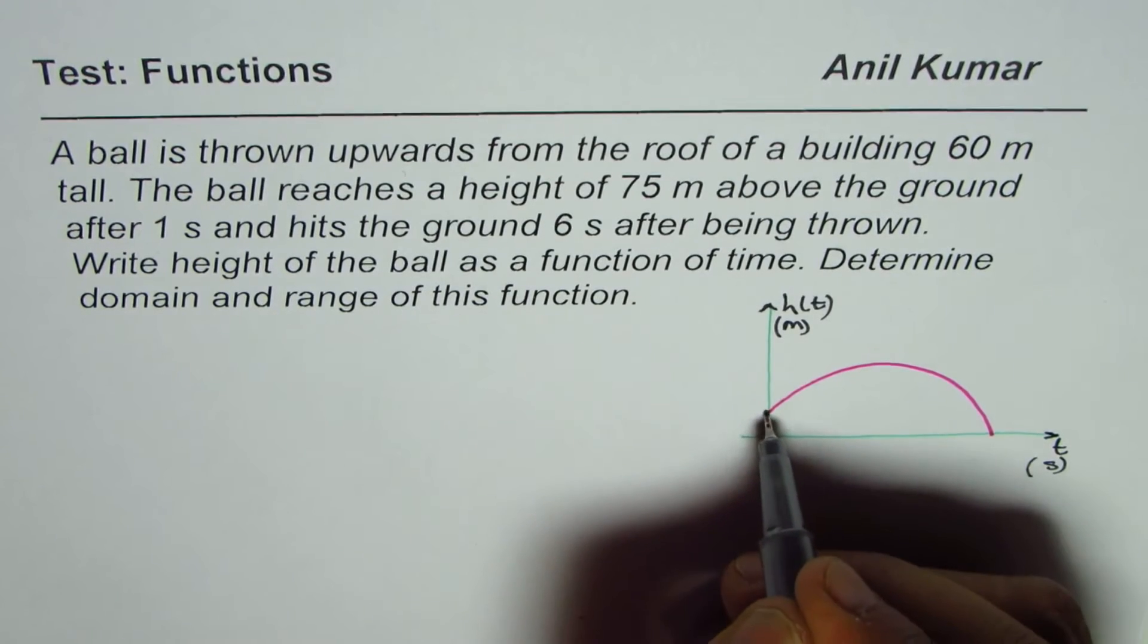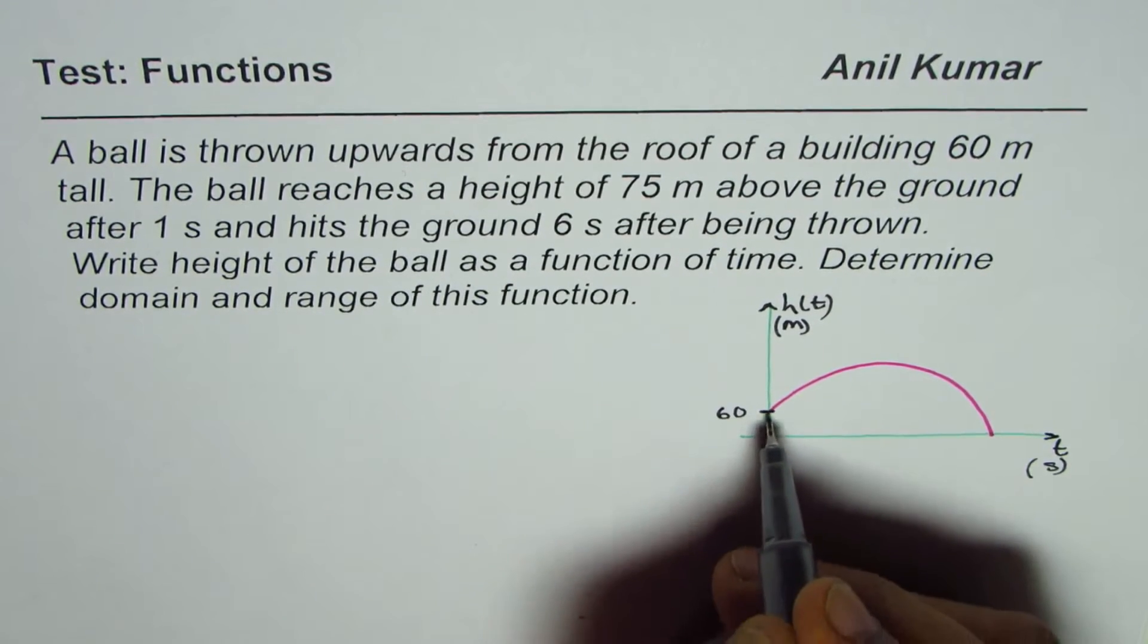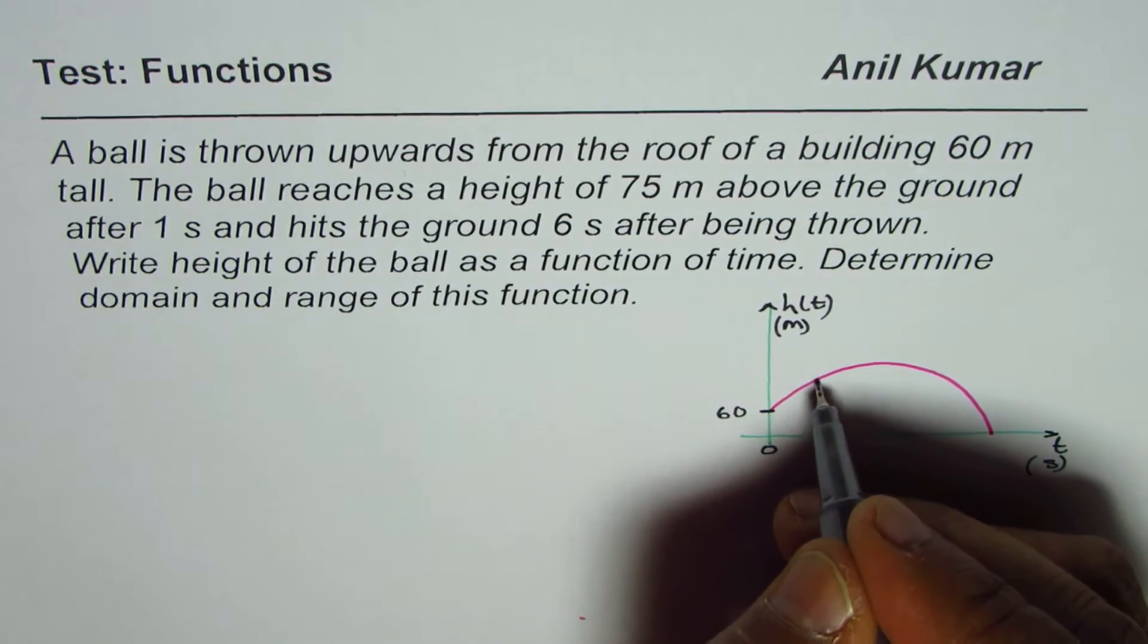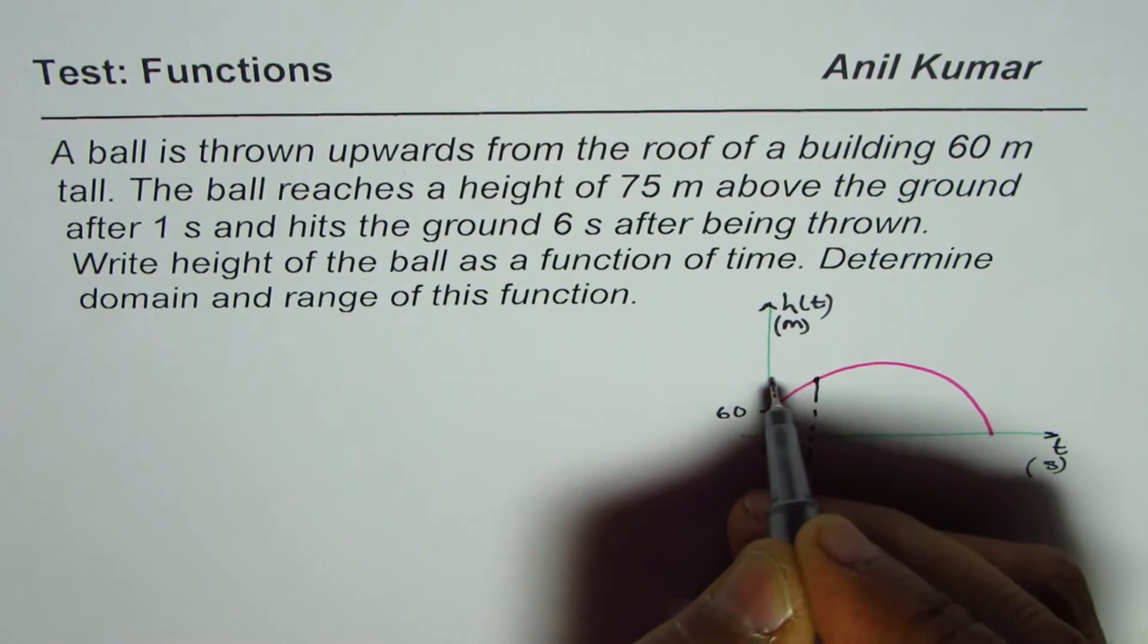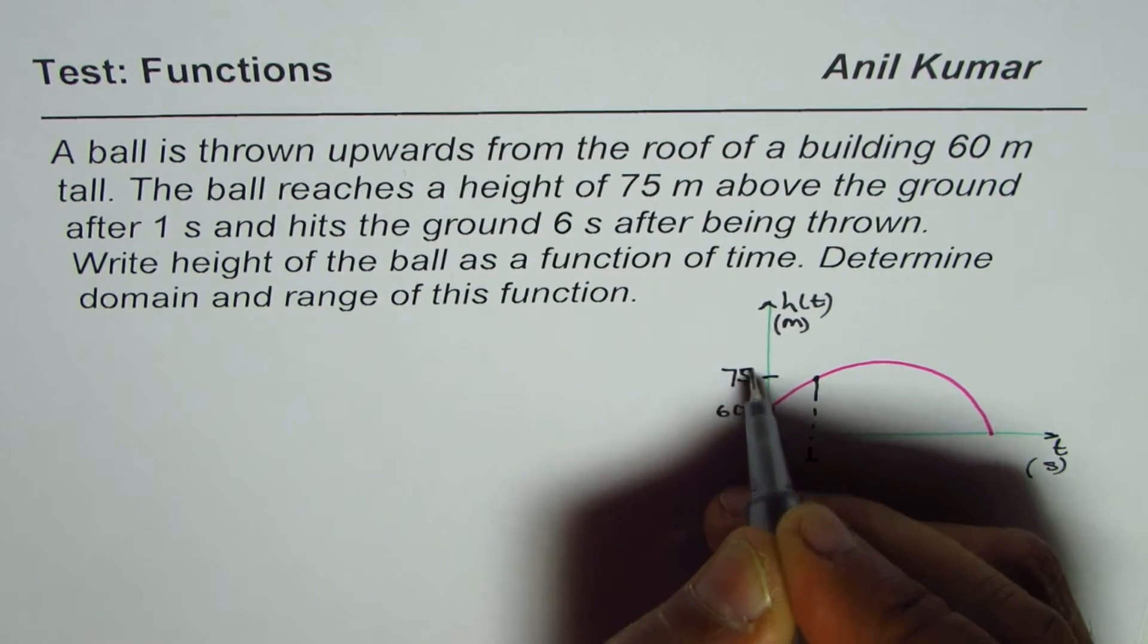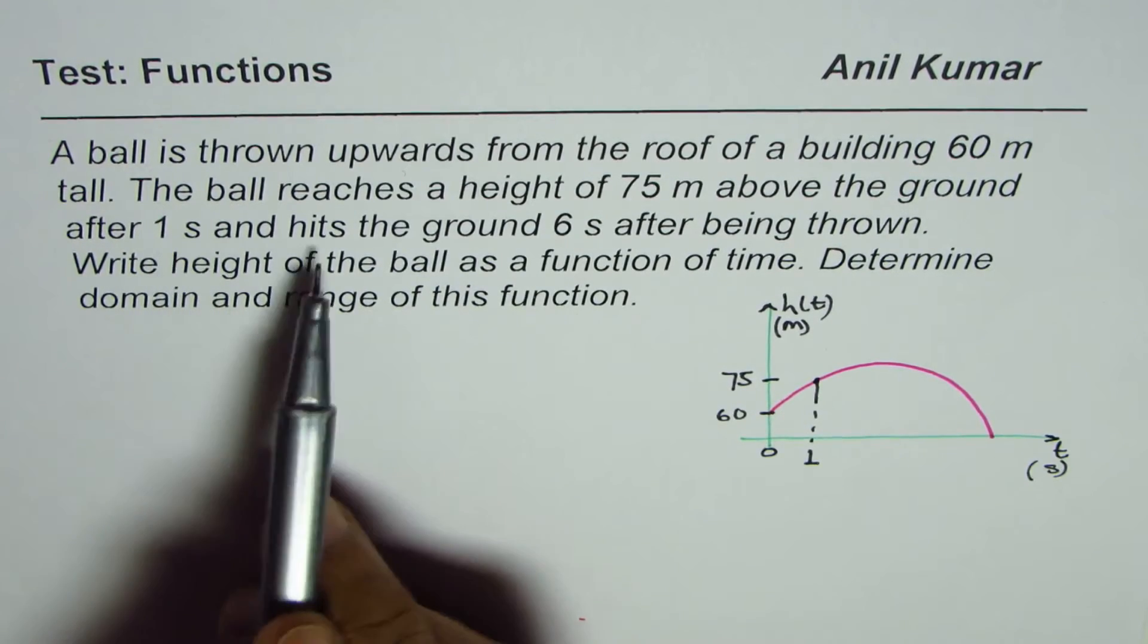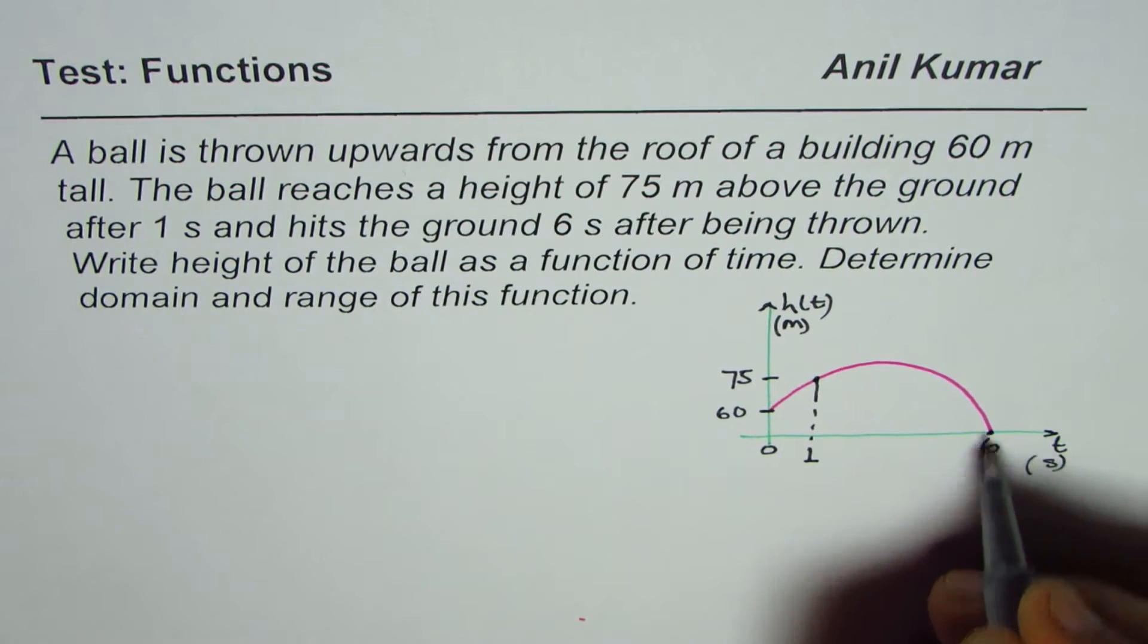A ball is thrown upwards from the roof of a building 60 meters tall, so at t equals to zero, height is 60. Ball reaches a height of 75 meters. Let's say this is 1, t is 1, and the height is 75 meters above the ground after one second.